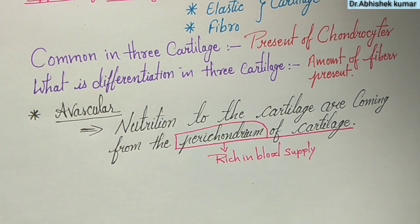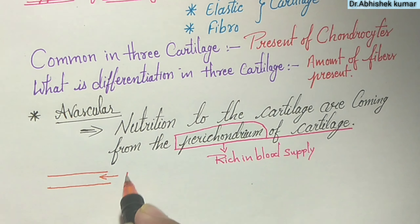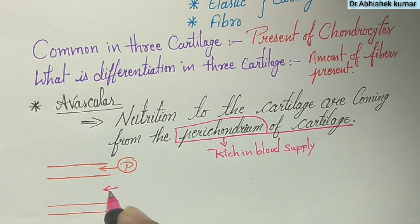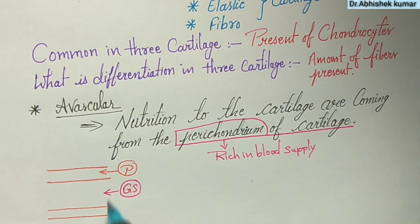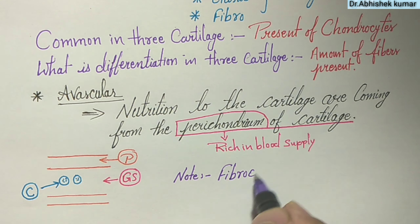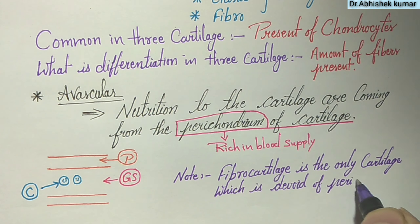The perichondrium is rich in blood supply. The blood vessels present in the perichondrium supply nutrition to the ground substance and to the chondrocytes by diffusion. You can see here: P represents perichondrium, GS represents ground substance, and chondrocytes receive nutrition by diffusion. One thing you must note is that fibrocartilage is the only cartilage which is devoid of perichondrium.